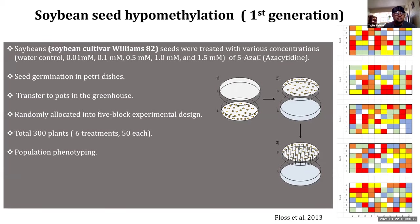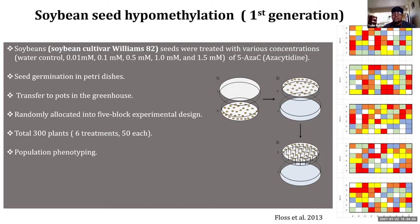For the first generation, we took the soybean cultivar Williams 82 and treated seeds with various concentrations of 5-azacytidine ranging from 0.01 mM to 1.5 mM, along with a water control. Seeds were germinated in petri dishes, transferred to pots in the greenhouse, and randomly allocated into a five-block experimental design. There were 300 plants total with 60 main groups including the water control — 50 plants each. We then examined the population for various phenotypes.